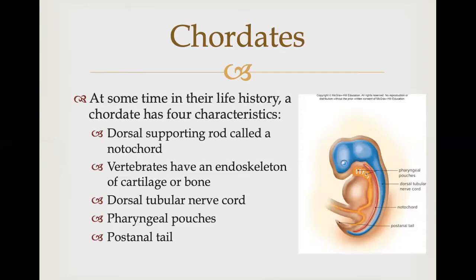The third feature is pharyngeal pouches or pharyngeal slits, seen only during embryonic development in most vertebrates. In invertebrate chordates, fishes, and some amphibian larvae, the pharyngeal pouches become functional gills — water passes into the mouth and pharynx and out through the gill slits, which are supported by gill arches. In terrestrial vertebrates that breathe with lungs, the pouches are modified: in humans the first pair becomes the auditory tubes, the second pair becomes the tonsils, and the third and fourth become the thymus gland and parathyroid. The last feature is a post-anal tail — a structure that extends beyond the anus.